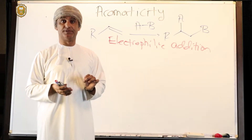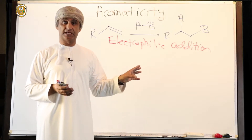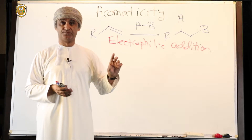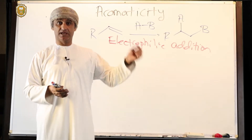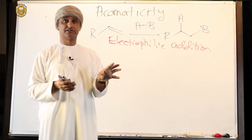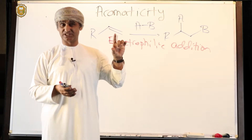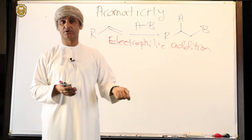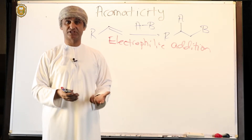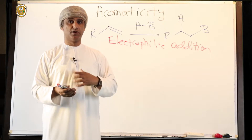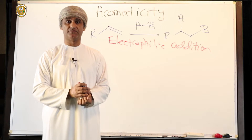Alkenes do react with electrophiles. If the electrophile is a halogen — for example, if you take a test tube containing cyclohexene and then add bromine — bromine is very characteristic in color: it is orange. If you add bromine to a test tube containing cyclohexene, the orange color of bromine disappears immediately. There is an instantaneous reaction between cyclohexene and bromine, which is very typical of alkenes.